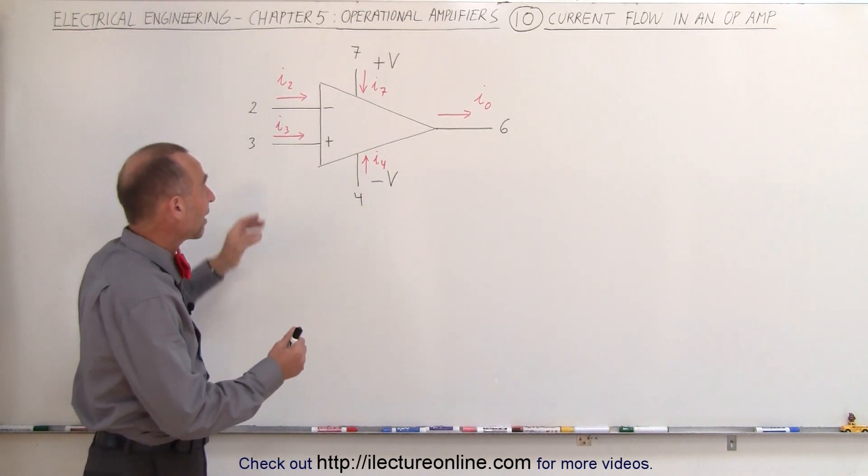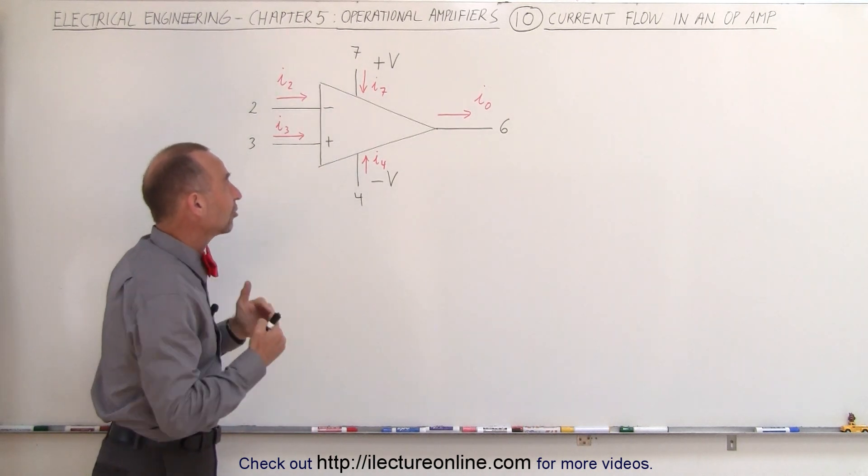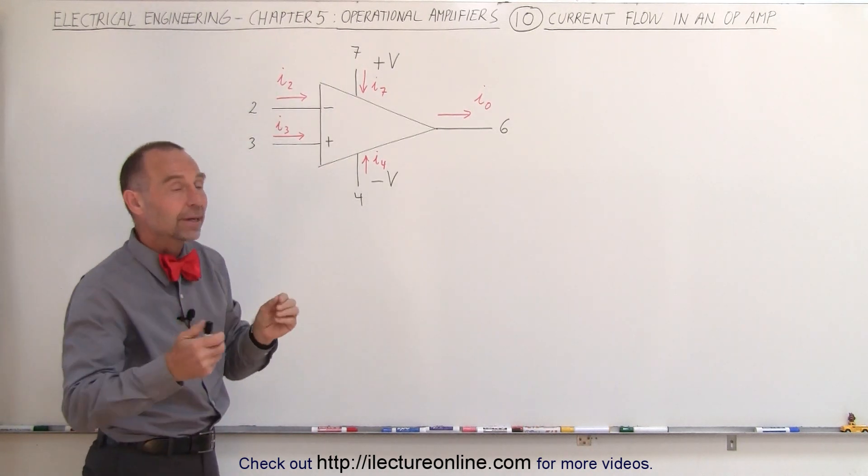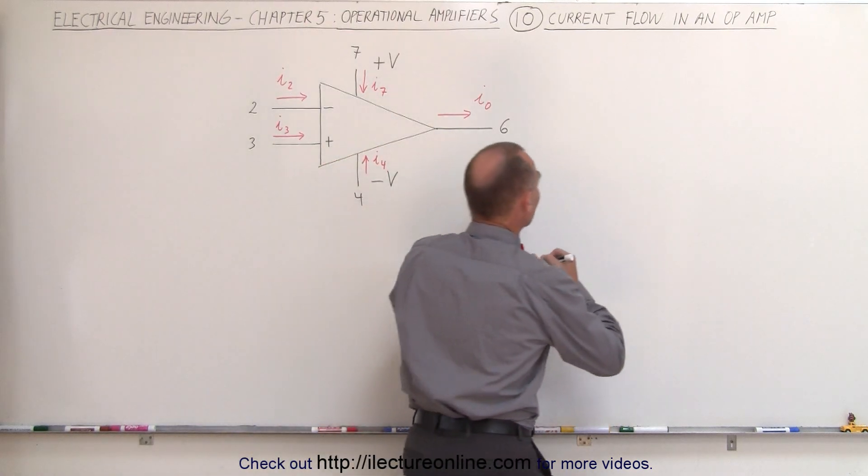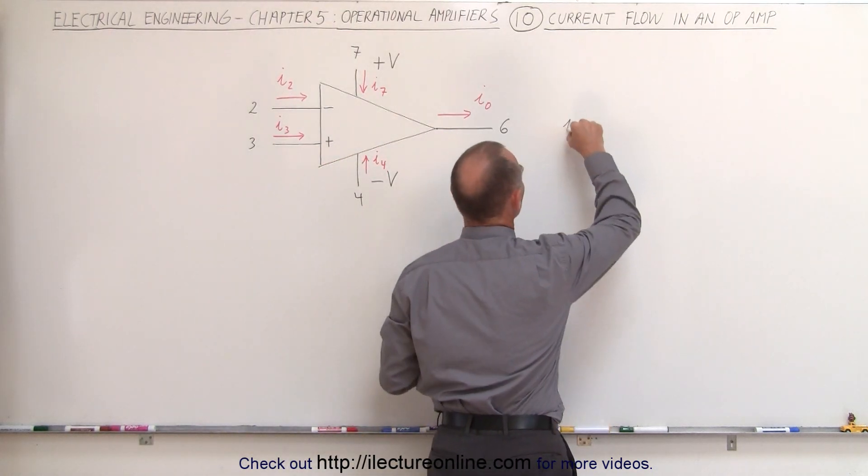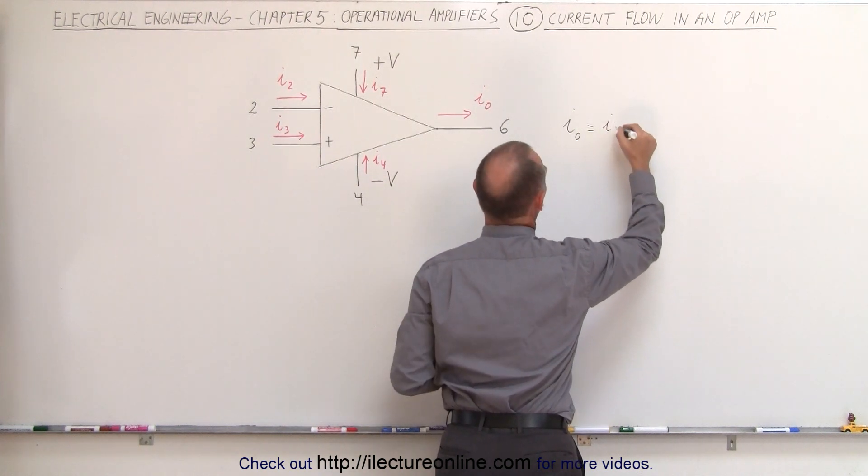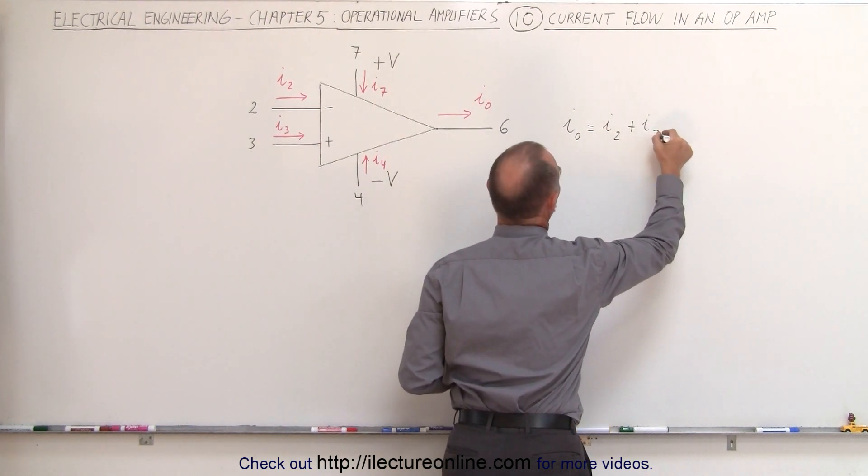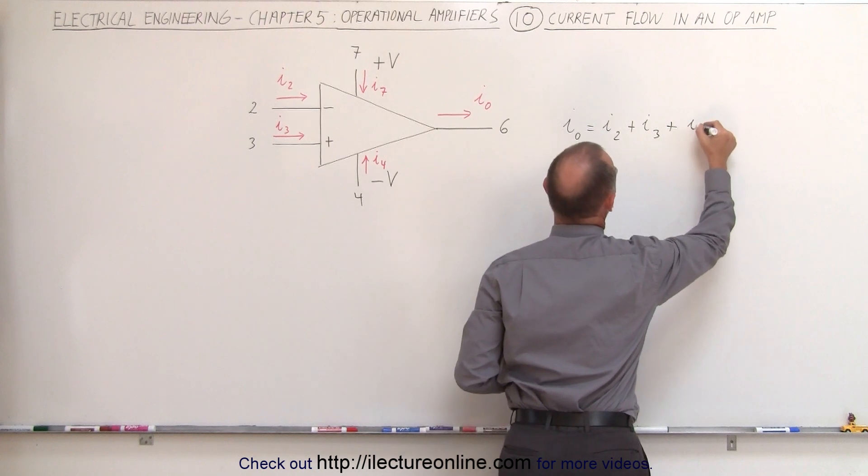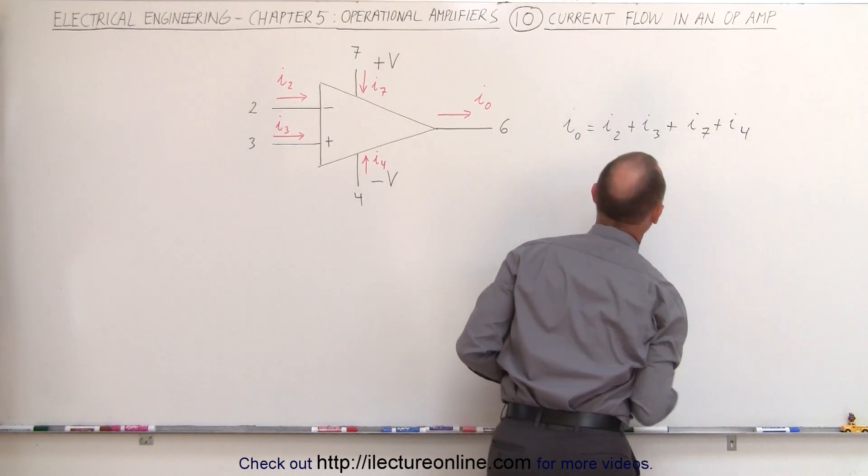It turns out that we have four sources of current going into the operational amplifier and one source coming out, which means that the output current I sub O is simply the sum of the four input currents: I2 plus I3 plus I7 plus I4.